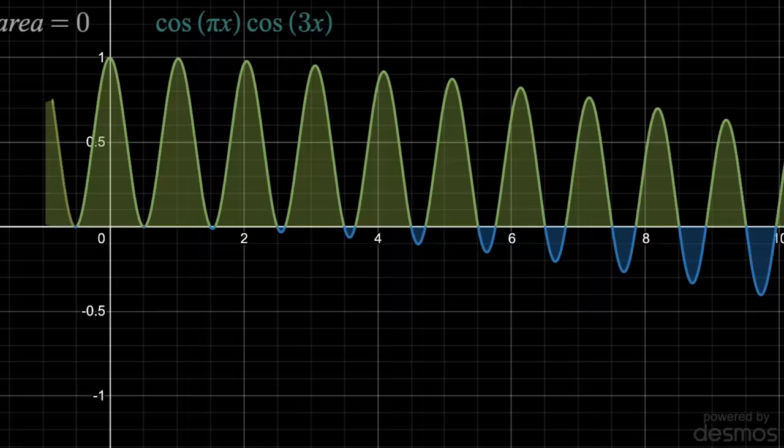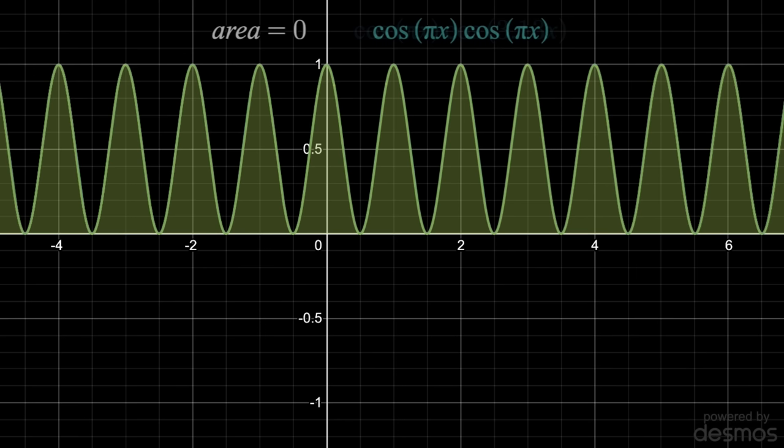However, once the two equations have the same period, and only at this time, does the graph snap up above the x axis, leaving us with an infinite area. This is just cosine of pi x all squared, which is why we only get positive values.